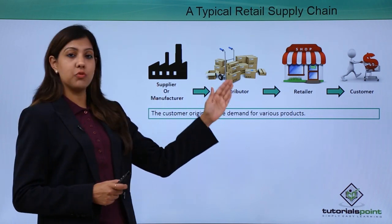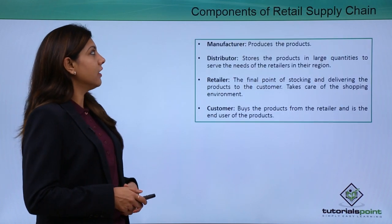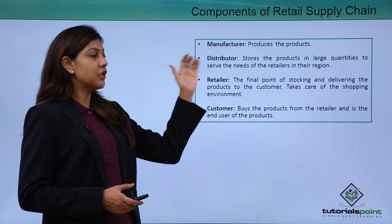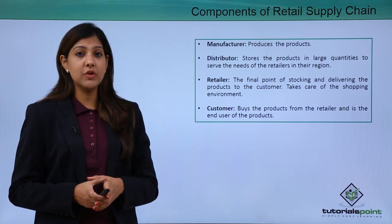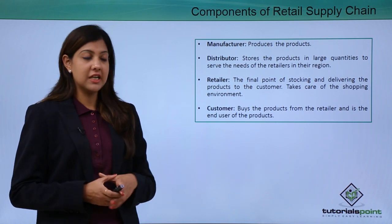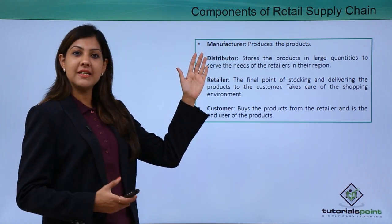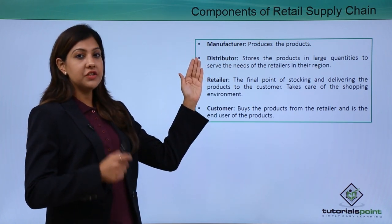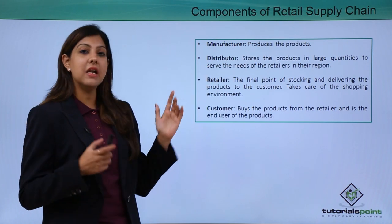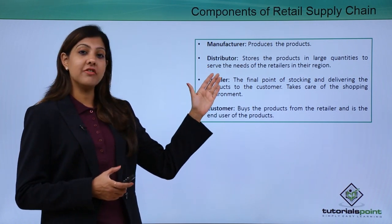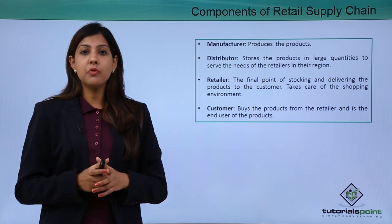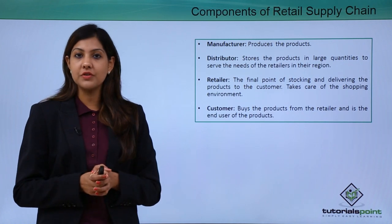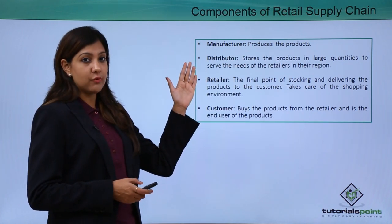Looking at the components of the retail supply chain: the manufacturer is the person or company which produces or manufactures the product — they have factories where products are manufactured. It then goes from the manufacturer to the distributor, who stores the products in large quantities to serve the needs of retailers in a particular region. A product may have different distributors across different geographical areas of the country.